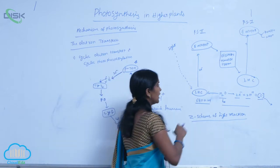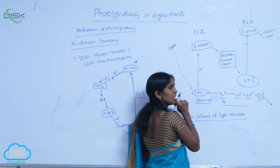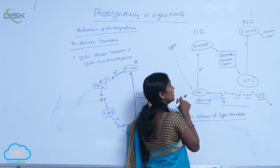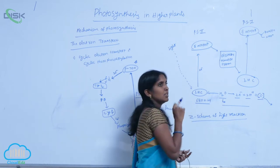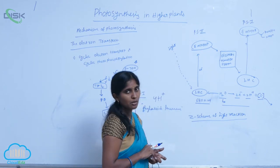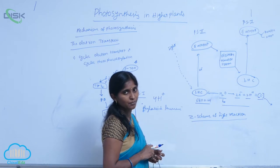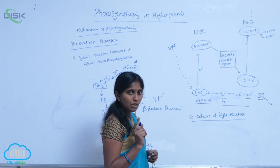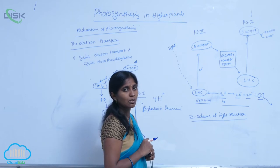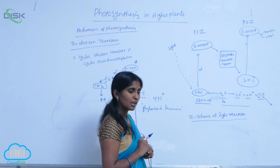The electron transport scheme looks like the Z alphabet. Hence, it is called the Z scheme of electron transportation and also called non-cyclic electron transportation. One water molecule is split; this is called the Hill reaction and also called photolysis.